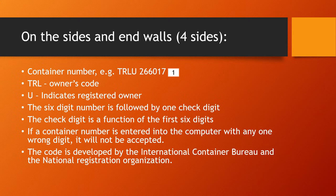On all four sides of the container and the end walls, you will find the container number. For example, if you see the container number written as TRLU 266017 with a check digit at the end — TRL stands for the owner's code, and the U stands for the fact that this owner is a registered owner.